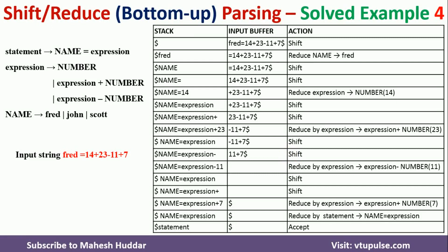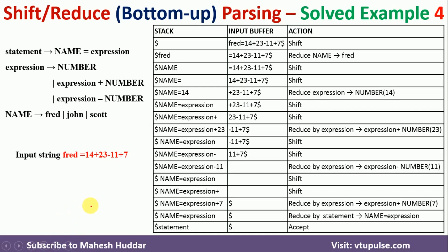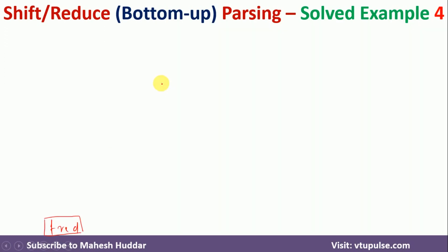We start the parse tree with the first token: fred. We create a node for fred in a square bracket because it is a terminal node. Fred was reduced to name, so we create a name node in a circle as a non-terminal node above it.